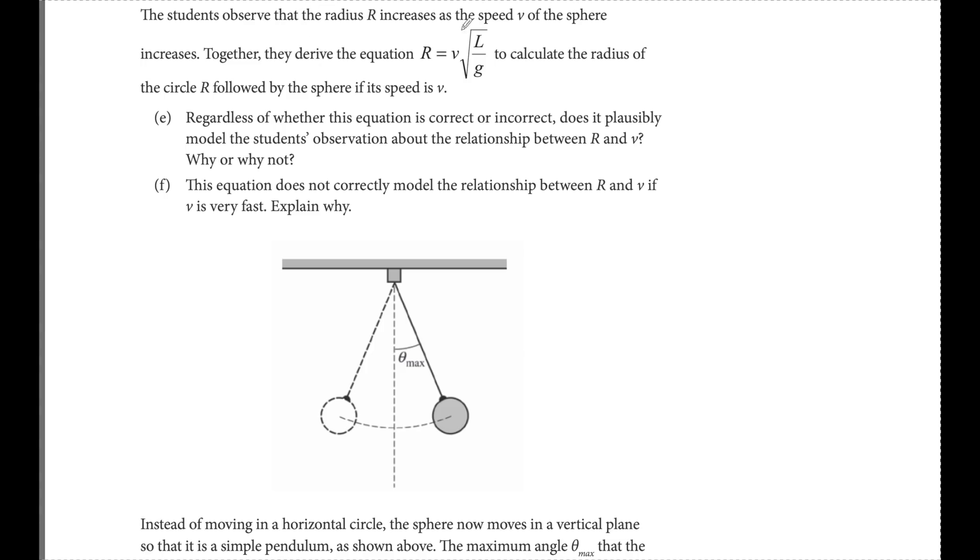The student observes that radius R increases as V of the sphere increases. They derive this equation to calculate the radius. Does it plausibly model the student's observational relationship between R and V? Yes. We know that L over G, the square root of that, is a constant. So if we look at this relationship, R equals V times some constant, as R goes up, V is going to go up. Does it correctly model the relationship between R and V if V is very fast? No. Because there are constraints of L. R can only be as big as L. Therefore, V can only increase until R equals L.